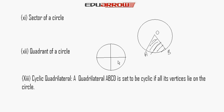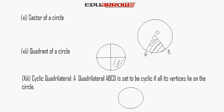Now we read about cyclic quadrilateral. A cyclic quadrilateral is a quadrilateral whose vertices lie on the circle. A quadrilateral ABCD is said to be cyclic if all its vertices lie on the circle — vertices A, B, C, and D all lie on the circle.